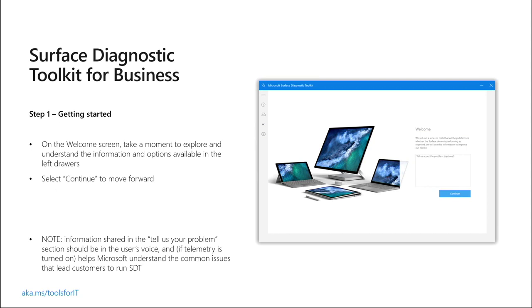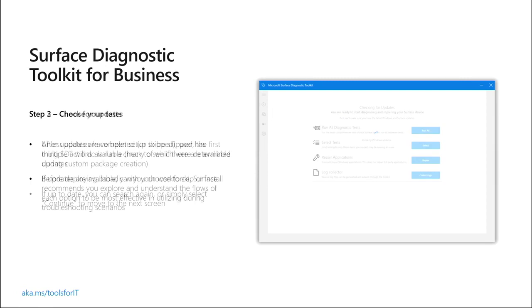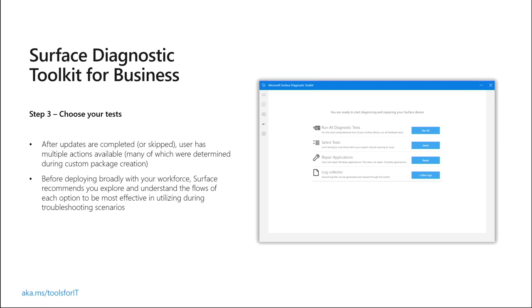Let's walk through how this program works. On the welcome screen, there's a spot to tell us what you think — we're always trying to improve on these tools. The new SDT for Business will also check for updates automatically. Previously, you had to go specifically to aka.ms/tools for IT to download the new version. Now, it will check internally to make sure it's aware of all the new devices on the market.